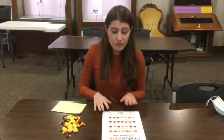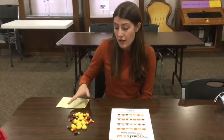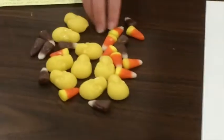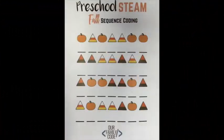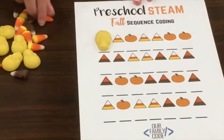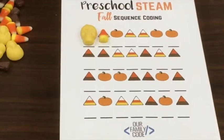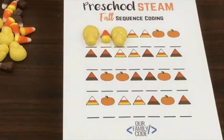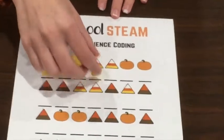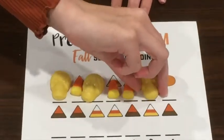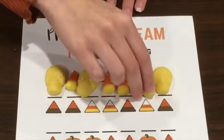Our activity today is going to be about sequencing. We're going to need some candy — I used some leftover Halloween skulls and candy corn in two different colors, along with a worksheet you can find at ourfamilycode.com, and we'll also have a link on our webpage. All we're going to be doing is putting the candy on the correct shapes. I'm using a skull instead of a pumpkin, so I would put my skull here, and then put this color candy corn here because it matches. As we do this, it can be considered sequencing because we are putting the code in the correct order.